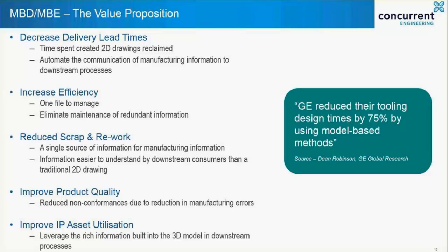We also reduce scrap and rework. With all the information required to manufacture the product in a single file, there's less chance of information key to accurate manufacture being missed. There are also fewer errors caused by misinterpretation when working with this easier-to-understand 3D information. This in turn improves product quality, with the number of non-conformances reducing. By adopting MBD, we greatly improve our utilisation of these valuable 3D assets. In a recent publication by the NCMS model-based enterprise forum, GE claimed to have reduced their tool design times by 75% after adopting model-based methods.